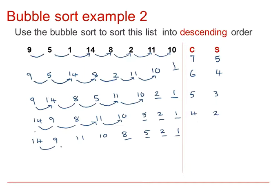Again, with the 14 and the 9, we will have the 9 swapping with the 11 and then with the 10. Which will leave the list as 14, 11, 10, 9, 8, 5, 2 and 1.